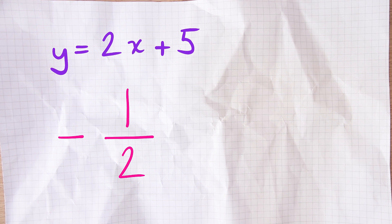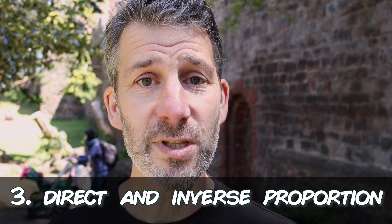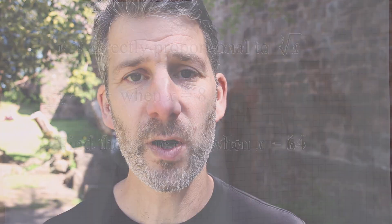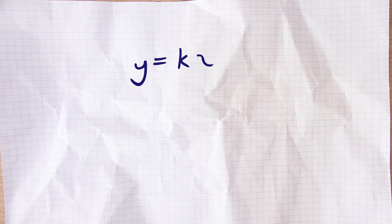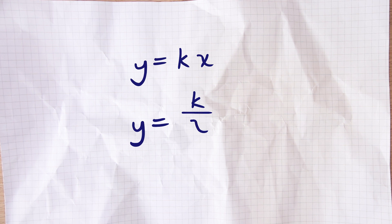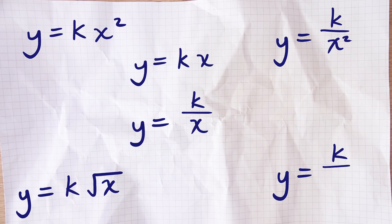The third topic — which has appeared in three of the last four papers — is direct and inverse proportion. These are the questions where you form an equation using the letter k. If it's direct proportion, it's y = kx. If it's inversely proportional, it's y = k divided by x. The example might involve x squared, x cubed, or the square root of x, but the beginning of your equation always follows the same pattern: y equals k times whatever your question gives you.